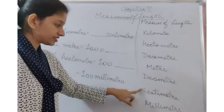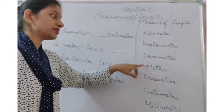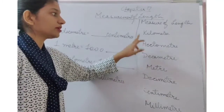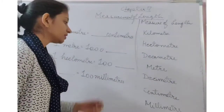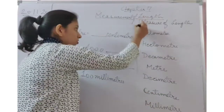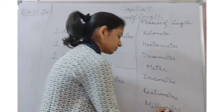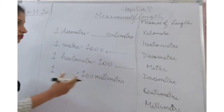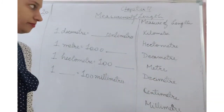10 millimeters make up 1 centimeter. Similarly, 10 centimeters make up 1 decimeter. 10 decimeters make up 1 meter. 10 meters make up 1 decameter. 10 decameters make up 1 hectometer. 10 hectometers make up 1 kilometer. This is the relation between all these units of length.